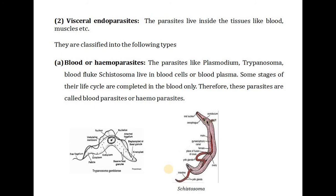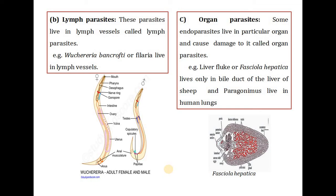The second type of visceral parasite is lymph parasites, which live in lymph vessels. An example is Wuchereria bancrofti (filaria), which lives in lymph vessels and causes the disease filariasis.